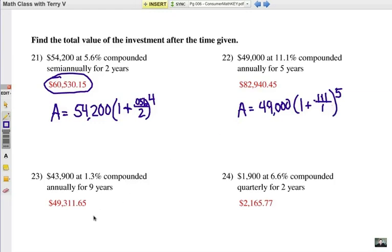Number 23. Principle, 43,900. You're going to multiply that by one plus. The 1.3% is .013. And it's compounded annually, so once a year, divided by one. And once a year for nine years means it'll be compounded nine times.